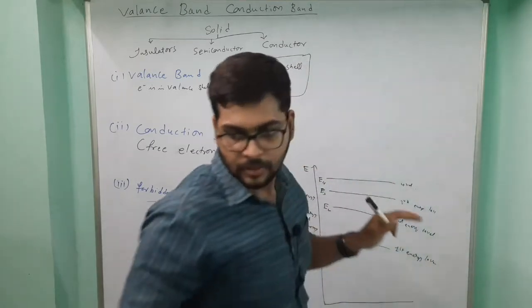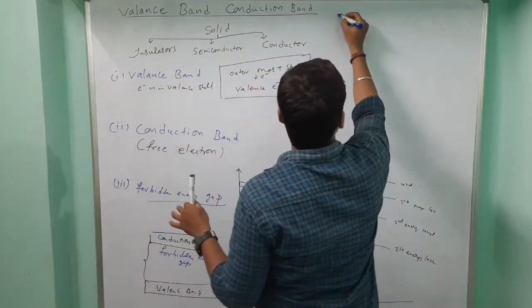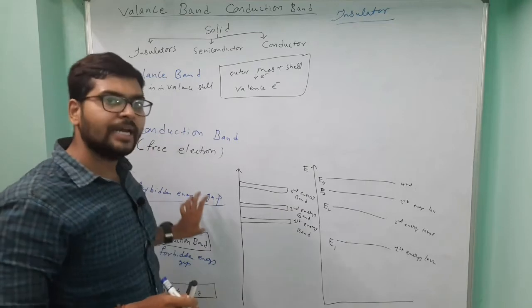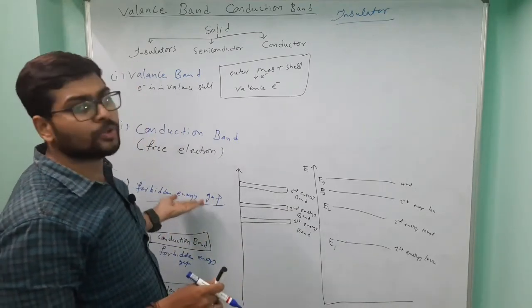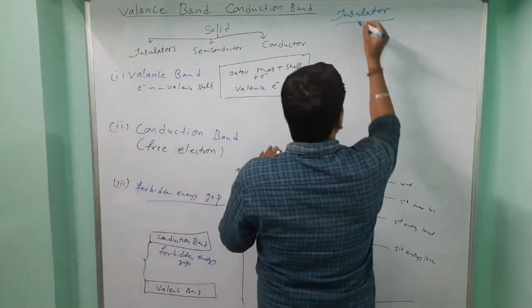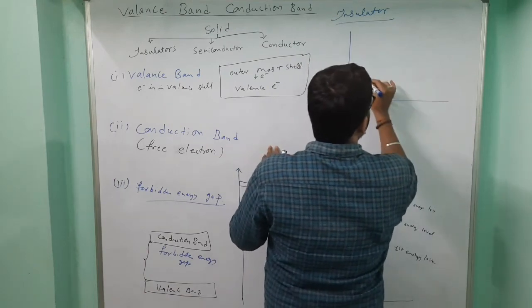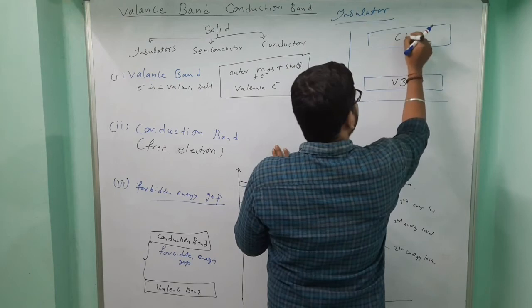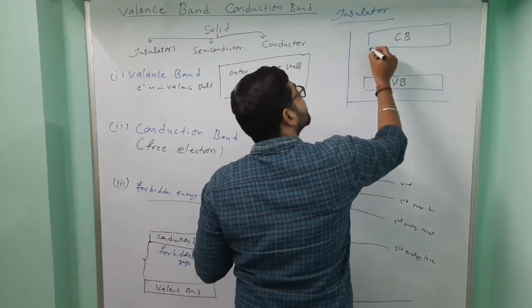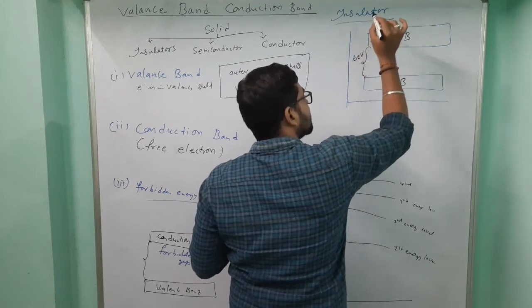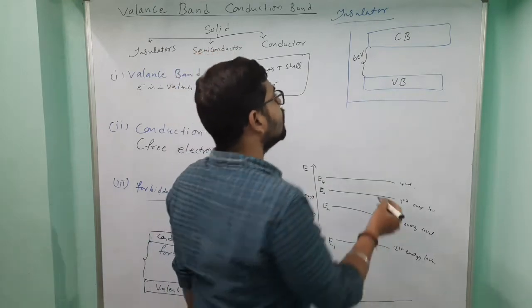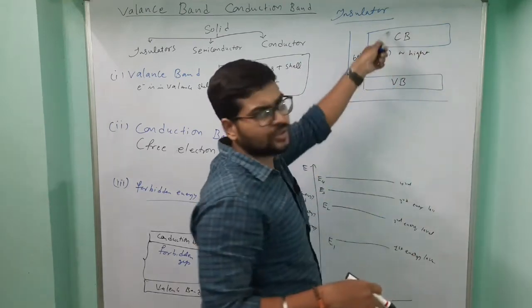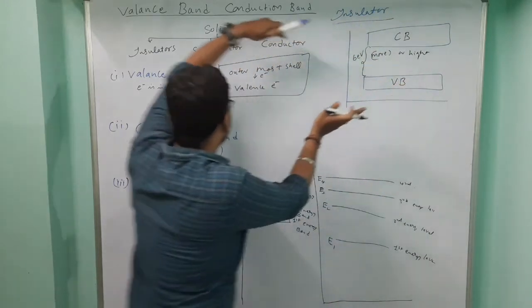Now, first I am taking insulators. For every solid we have a valence band and conduction band with an energy gap. For an insulator, this energy gap is huge — approximately 6 electron volts (eV) or more. So the gap between valence band and conduction band is very large, and an electron can very rarely jump across it. That is why it is an insulator — electricity cannot pass through it easily.